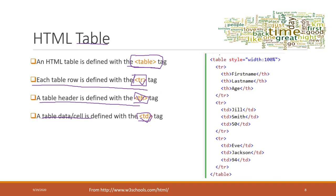Let's look at an example. We have a table with a style attribute setting the width to 100%, so it occupies the entire screen. The table has three rows, and everything belongs to the table tag.